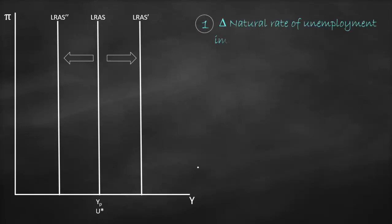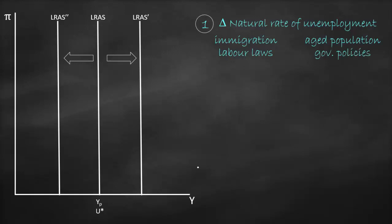The factors that will shift our long-run aggregate supply curve: number one is a change in the natural rate of unemployment. This can change due to immigration — for example, if a country has more immigration, it will have a larger labor force, so the long-run aggregate supply curve will shift to the right. Or it could be related to an aging population, such as in Europe, where if the majority of the population becomes elderly, the labor force will decline and the long-run aggregate supply curve will shift to the left. Labor laws also play a role — for example, in some countries the retirement age is 67 while in others it is 45. All of these factors affect the long-run aggregate supply curve because they affect the natural rate of unemployment. Government policies related to immigration are another example.